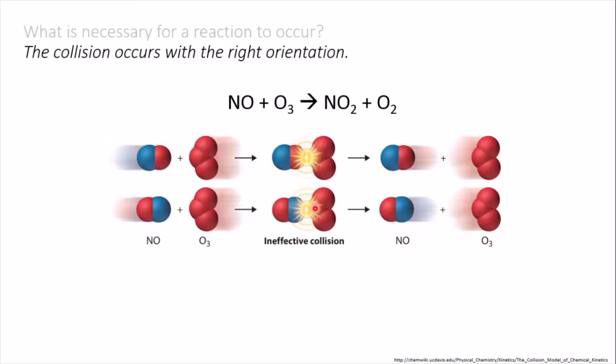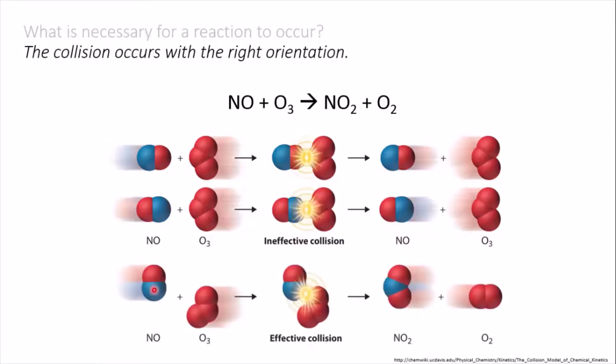However, if the nitrogen of the NO collides with an end oxygen on the ozone, then the oxygen can break off the ozone and join on to the NO, giving NO2, and then we have a successful reaction.